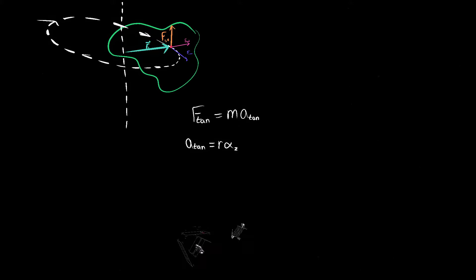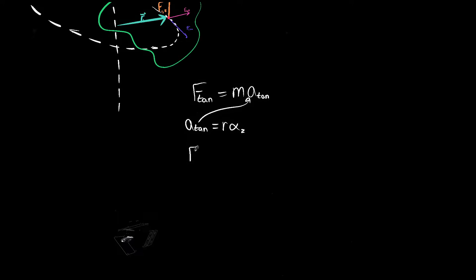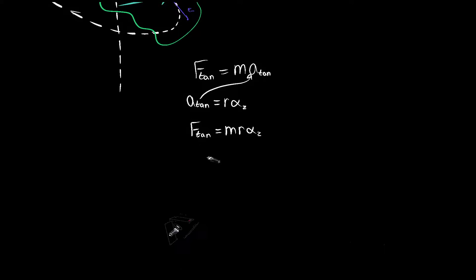And specifically, this is in the z direction. If you wrap your fingers around, the thumb of your right hand gives the direction of the angular acceleration. If we plug this in and apply that equation, then what we get is F_tan being equal to the mass of our little particle times r, the distance that that little particle is away, times alpha_z. And if we multiply both sides by r, then you get F_tan r is equal to mr squared alpha_z.